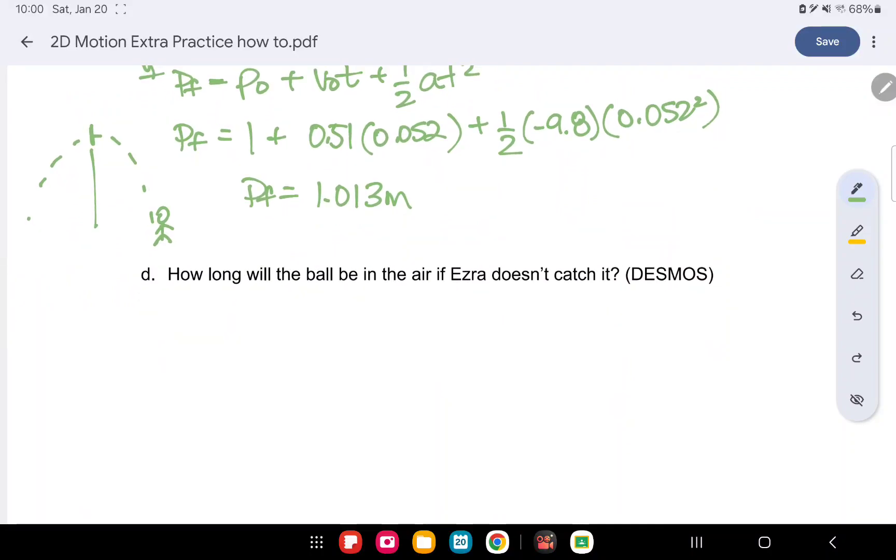How long will the ball be in the air if he doesn't catch it? So this is a question that it's going, so we're going from one meter tall and it's going to zero. So there's a height difference of one meter. So theoretically or hypothetically keep that in mind. I did mark this as Desmos, so we are going to have to use Desmos, but let's first find the equation.